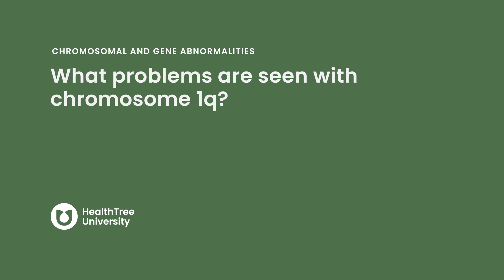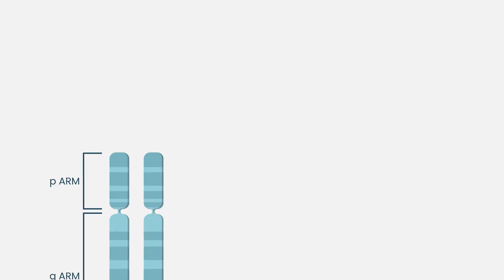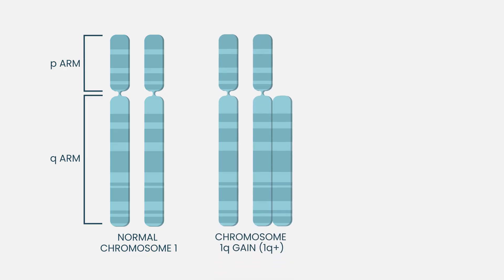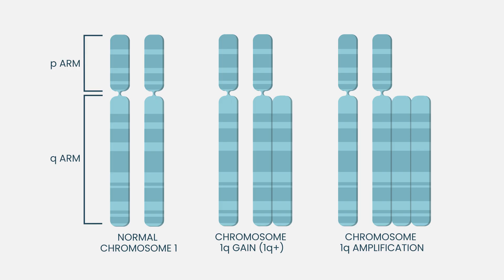What problems are seen with chromosome 1q? When we look at the chromosomes, you can either gain a whole chromosome or gain or lose part of a chromosome. For chromosome 1q, we're usually looking at a gain of that chromosome — called 1q+. Some patients can gain many copies of that chromosome, and those are often called 1q-amp. Usually it involves the whole chromosome or many bits of that part of the chromosome.